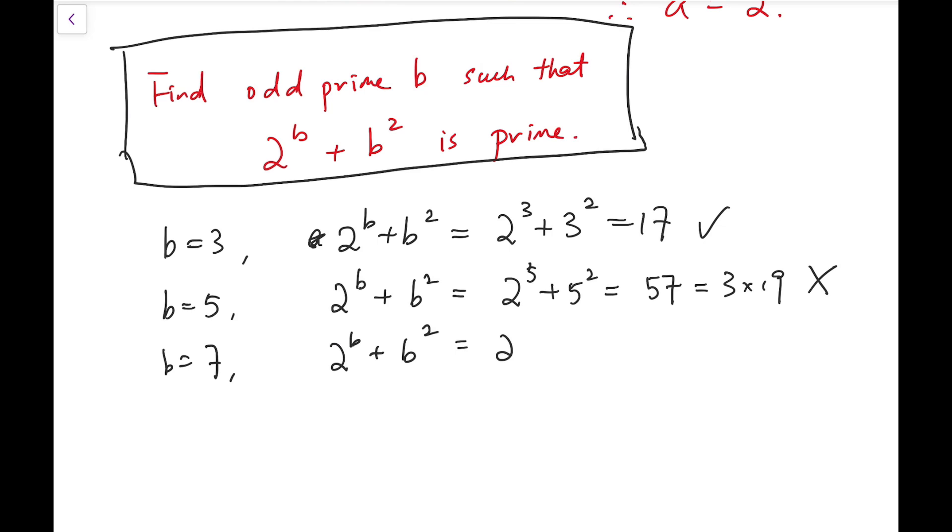If B is 7, then this expression is 2 to the 7 plus 7 squared, 128 plus 49 is 177, and that's 3 times 59, again not a prime. We're going to try a few more. Given that we can memorize the powers, 2048 plus 11 squared is 121, so that's 2169, and that's 3 times 723, so again not a prime.